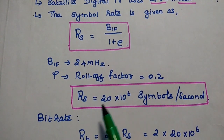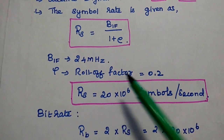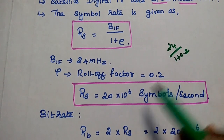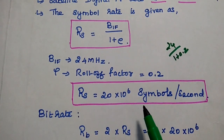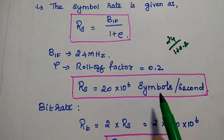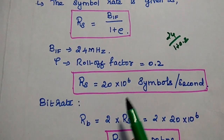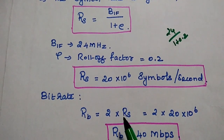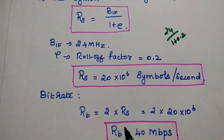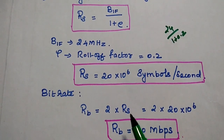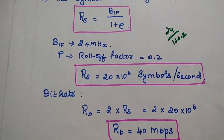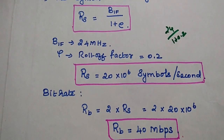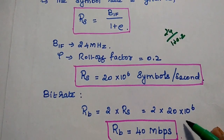So the symbol rate RS equals 24 divided by (1 + 0.2), which gives 20 mega symbols per second. The bit rate can then be calculated as 2 times the symbol rate. So the bit rate for digital TV using QPSK modulation is 40 megabits per second.